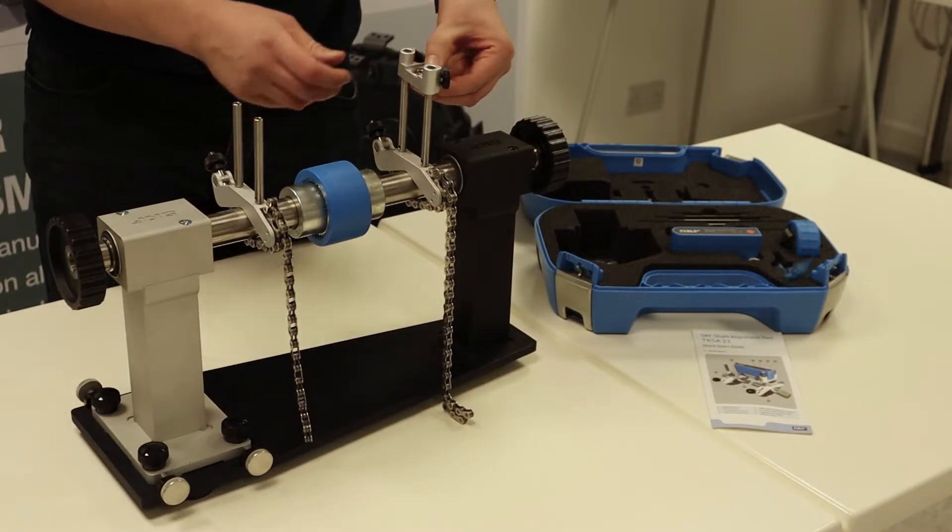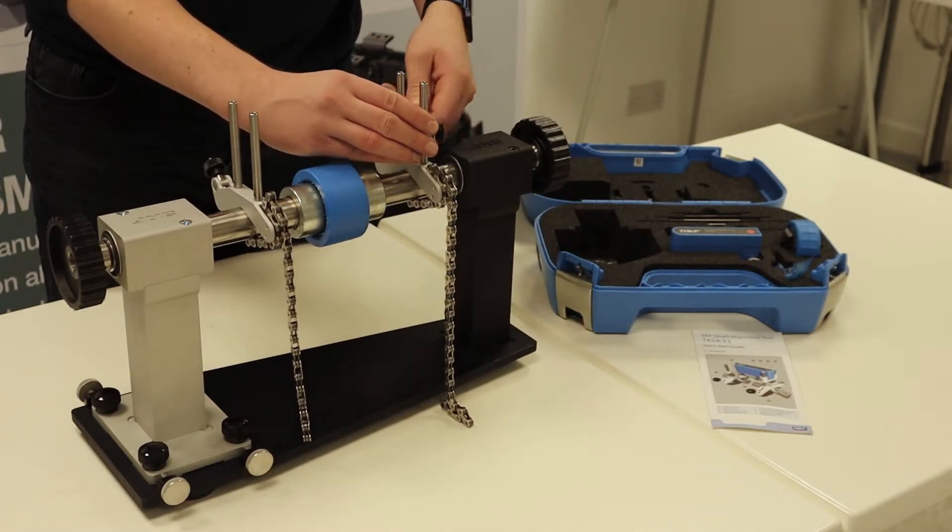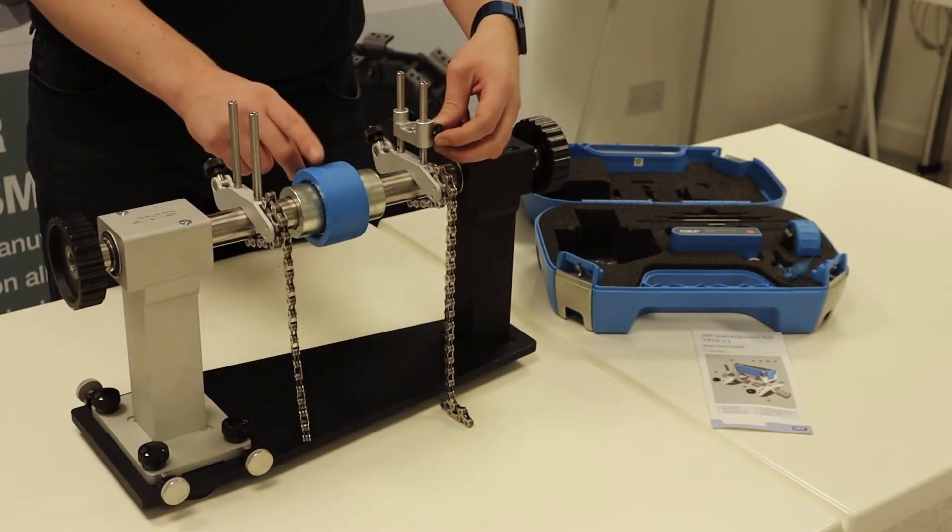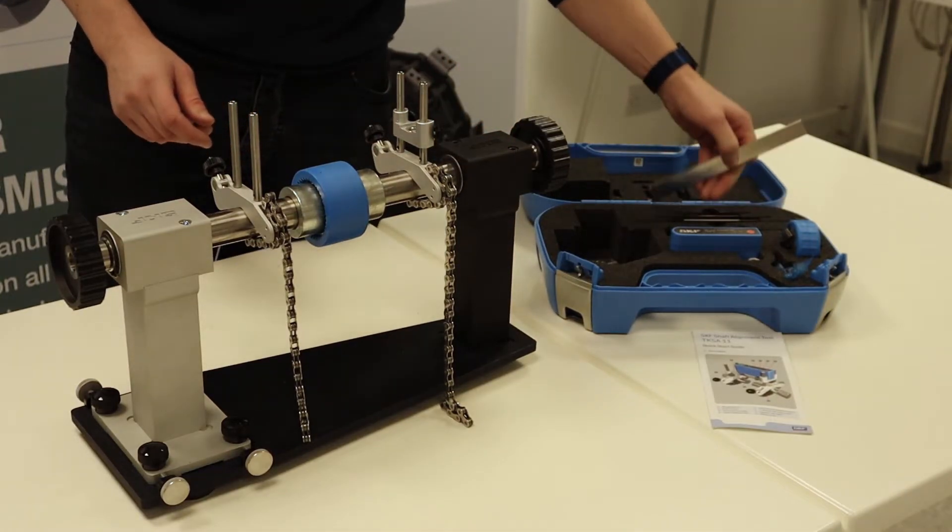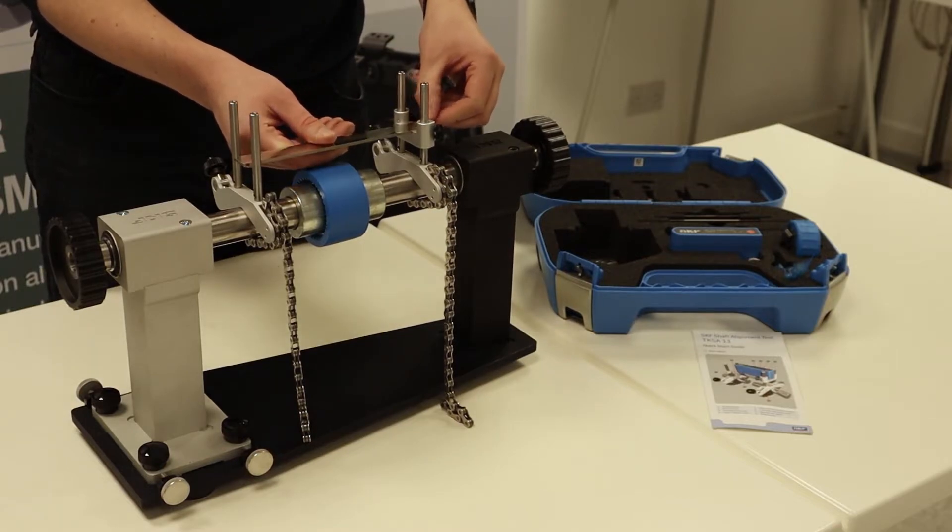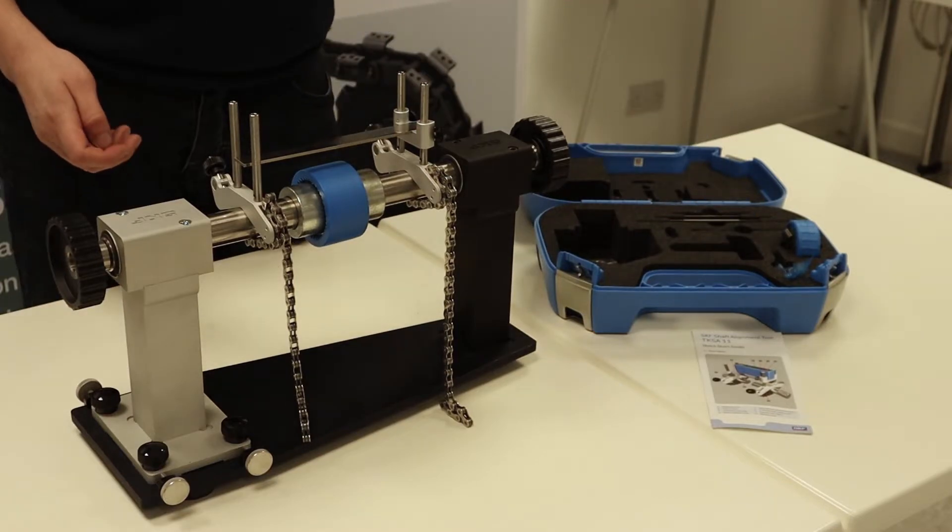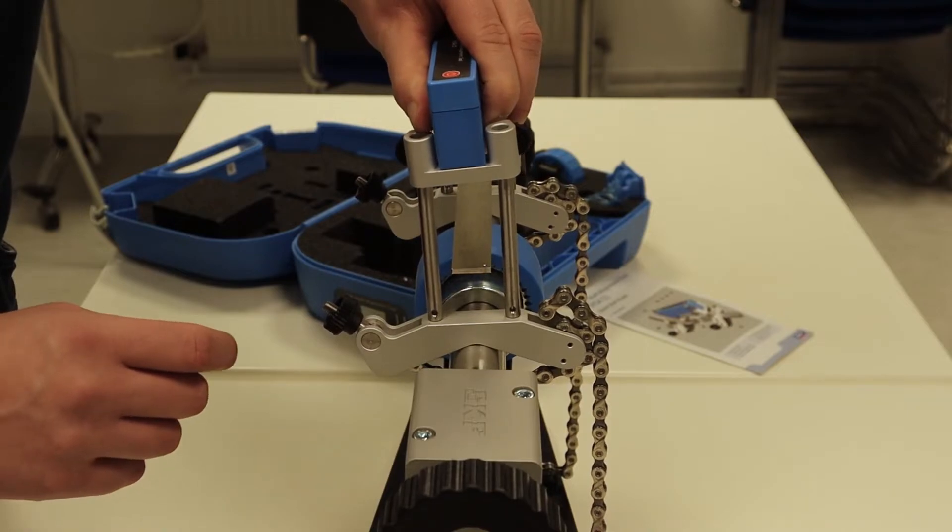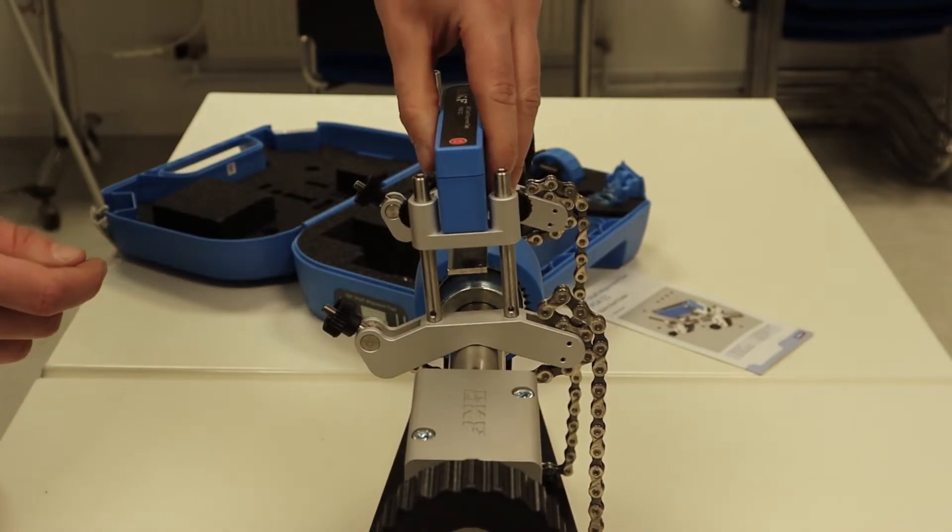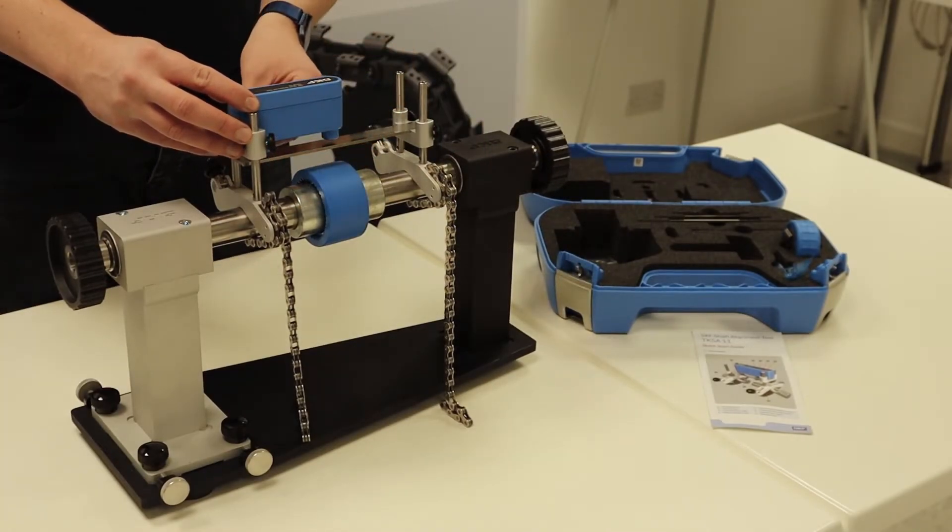So then put the magnetic base on. Just slides down. Needs to be just above the center height of the coupling. Then we put a reference bar on. This is what's going to record the measurement along with the laser device. This is exactly the same, just slides on. Let's just leave it just above the bar for now. The software will tell you how close it needs to be.